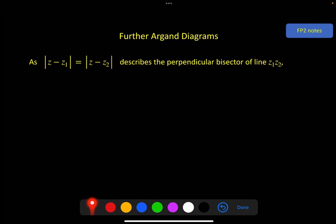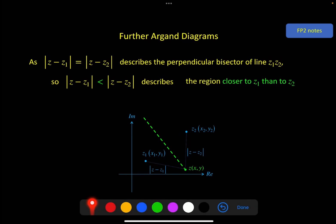There we go. The third and final region we're going to look at is connected with the perpendicular bisector of Z1, Z2. Here we've got this situation. If we replace this equals with an inequality, this is saying that the distance from Z to Z1 is less than the distance from Z to Z2. So from Z to Z1 has to be a closer distance, so it's all the points that are closer to Z1 than Z2, and that describes the region on one side of the line. In this case, this side.